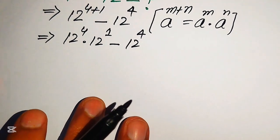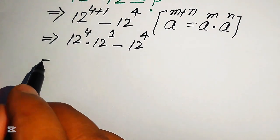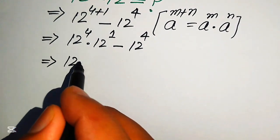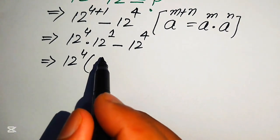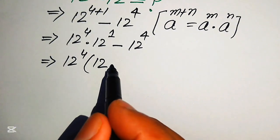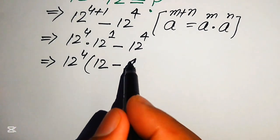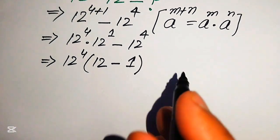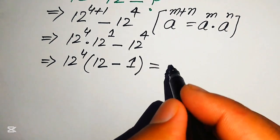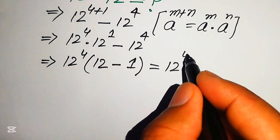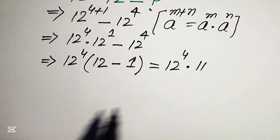Next, we take 12 to the power of 4 as a common factor. When we factor it out, the remaining values are 12 minus 1, which gives us 12 to the power of 4 multiplied by 11.